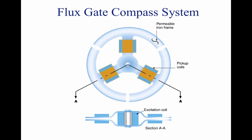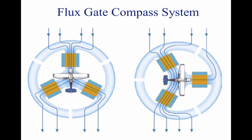A coil wound around the iron spacer in the center of the frame has 400 Hz alternating current (AC) flowing through it. During the times when this current reaches its peak — twice during each cycle — there is so much magnetism produced by this coil that the frame cannot accept the lines of flux from the Earth's field. As the current reverses between the peaks, it demagnetizes the frame so it can accept the flux from the Earth's field. As this flux cuts across the windings in the three coils, it causes current to flow in them, and these three coils are connected in such a way that the current flowing in them changes as the heading of the aircraft changes.